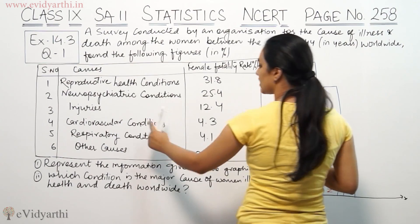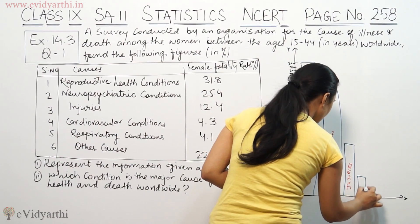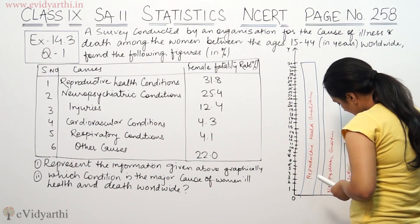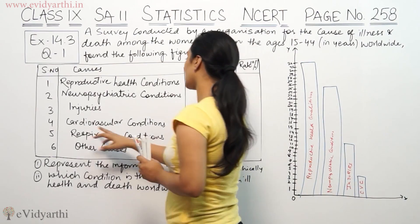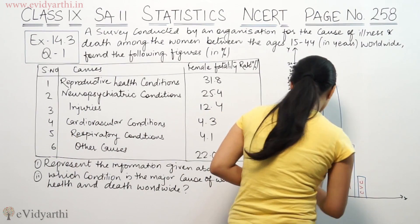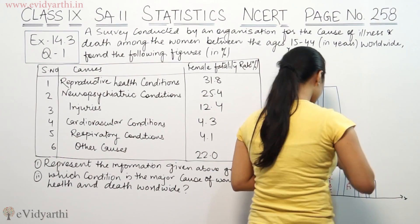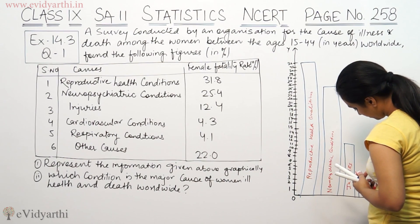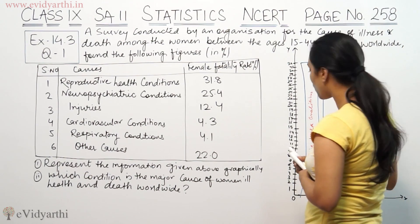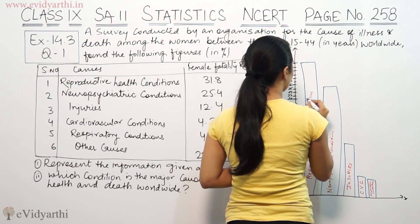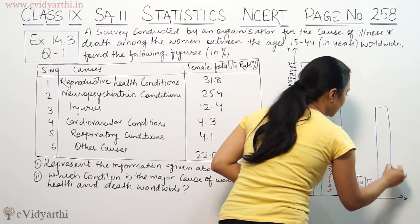Then next is cardiovascular conditions, 4.3. Here is the cardiovascular conditions bar — I am writing it in short form, but you can write the full name. Respiratory conditions, 4.1 — this is respiratory conditions. Then last is other causes, 22. 22 is here — this is other causes.